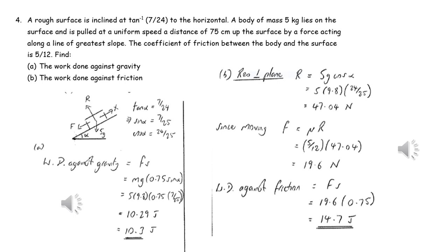To calculate the work done against friction we will need to first work out the magnitude of the frictional force. We can resolve perpendicular to the plane to find the normal reaction, and then since the object is moving we can use F equals μR. Finally we can work out the work done against friction by using the product of the friction and the distance travelled in the direction of the force.